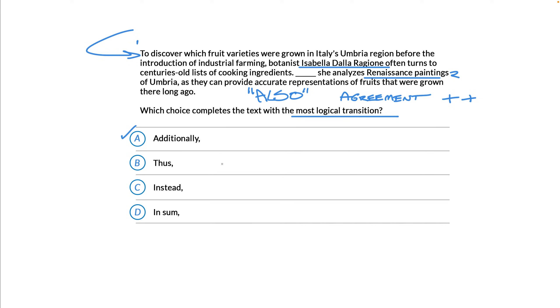Look, if this were test day, I'd just select this choice and move on to the next question. But, let's take some time now to look more closely at the other choices. Choice B is thus, which is a cause-and-effect transition. Thus is kind of like therefore.